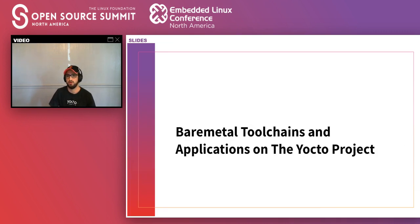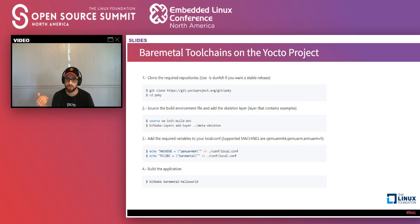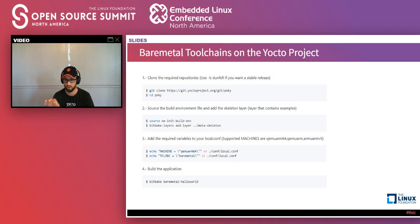The next part of the presentation is experimental toolchains and applications on the Yocto project. We've made progress allowing the Yocto project to build different toolchains — one of them is a toolchain for bare metal applications. Since you already have the toolchain, you can compile your sources for that and get a running application for some architecture. There's an example on the Yocto project in meta-skeleton called 'bare-metal-hello-world'. It's a very simple example — just a hello world.